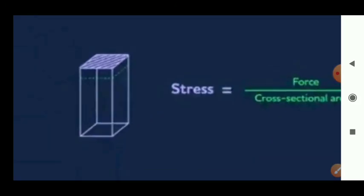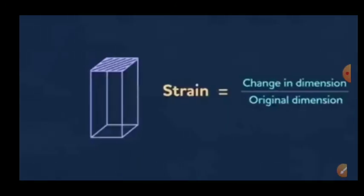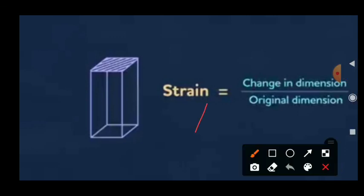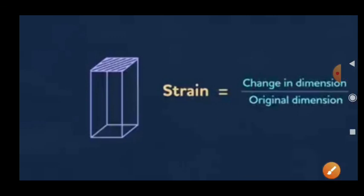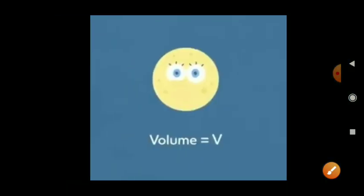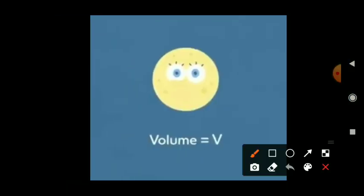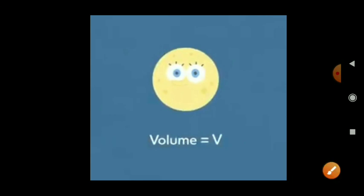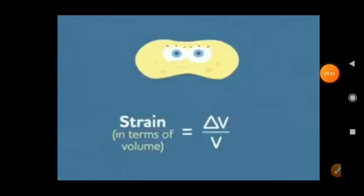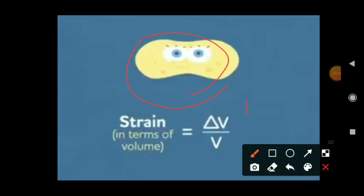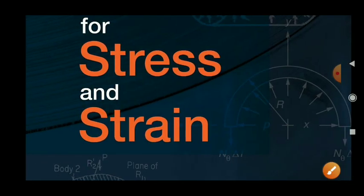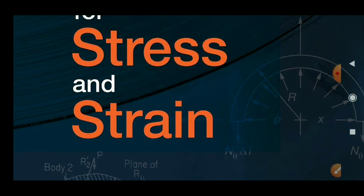To revise: stress equals force divided by area; strain equals change in dimension divided by total dimension (delta L by L); and volume strain equals delta volume divided by total volume. Thank you for watching. Subscribe to my channel and share with your friends. Bye bye.